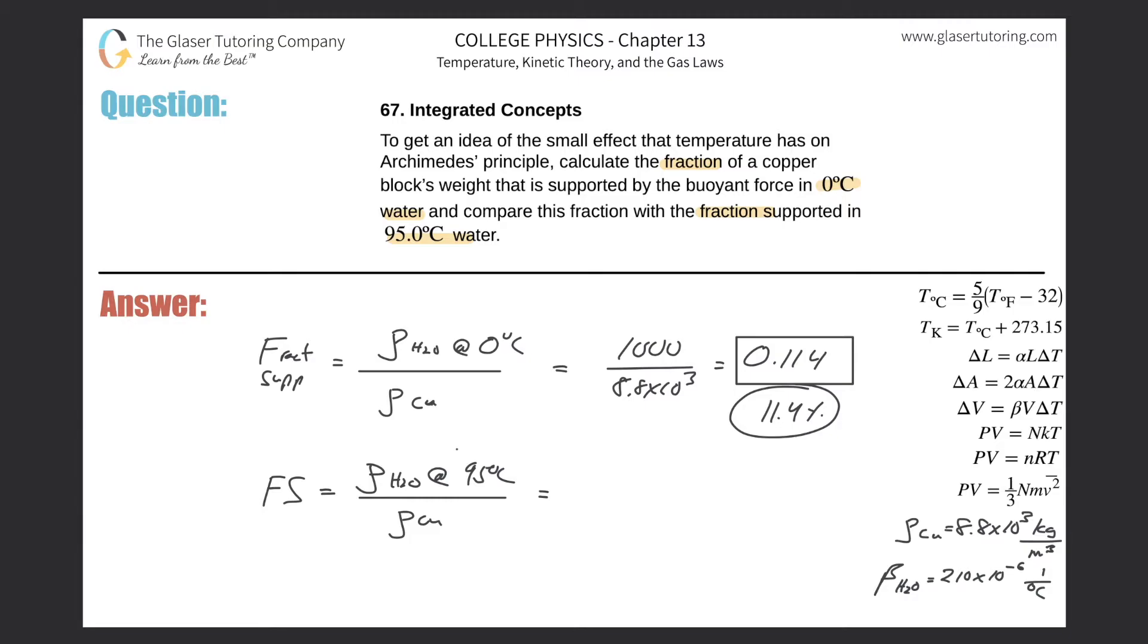Although that is not true, that is not what the density is of water at 95 degrees Celsius. It changes ever so slightly. So how do we figure that out? Well, you have to remember back to the beginning of the chapter where we talked about concepts of thermal expansion.